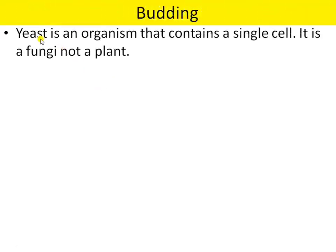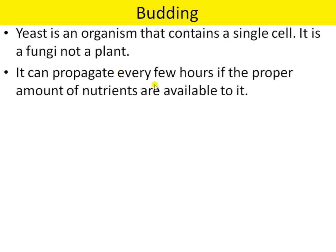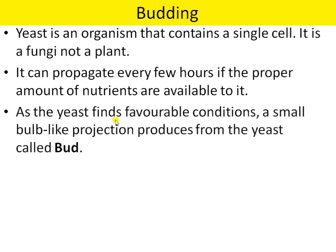Next, asexual reproduction includes budding. Budding is a type of asexual reproduction where a small part of the parent plant grows into a bulb-like projection called a bud. Yeast is an organism that contains a single cell — it is a fungus, not a plant. It can propagate every few hours if the proper amount of nutrients are present. When yeast finds favorable conditions, a small bulb-like projection called a bud is produced from the yeast.